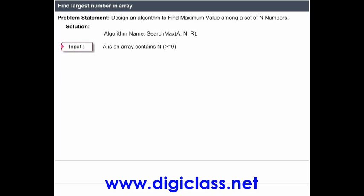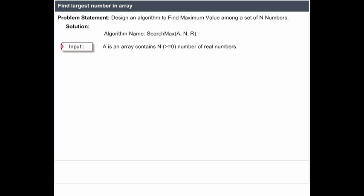Input: A is an array containing N (>=0) number of real numbers. Output: R will hold the index of the first maximum value in the array A.